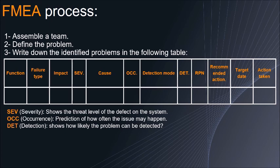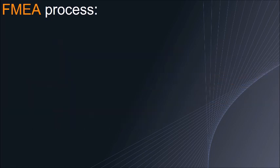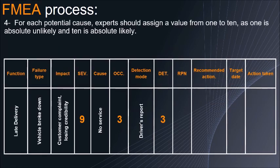Level severity shows the level of threat of the defect on the system. Occurrence is the prediction of how often the issue may happen. Detection is how likely the problem can be detected. For each potential cause, experts should assign a value from 1 to 10, where 1 is absolutely unlikely and 10 is absolutely likely.